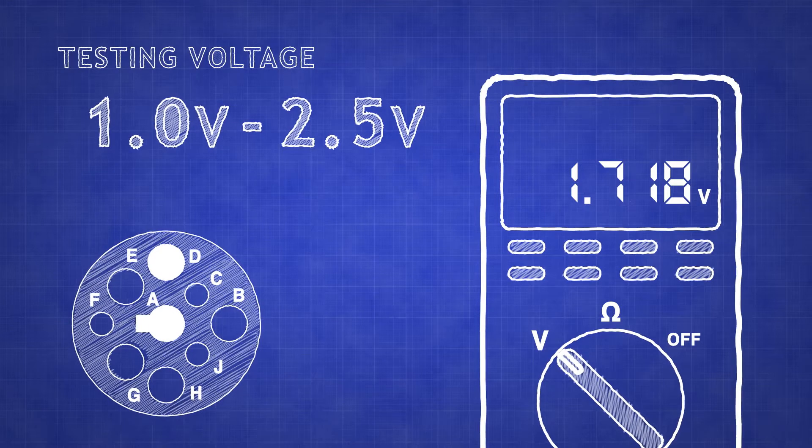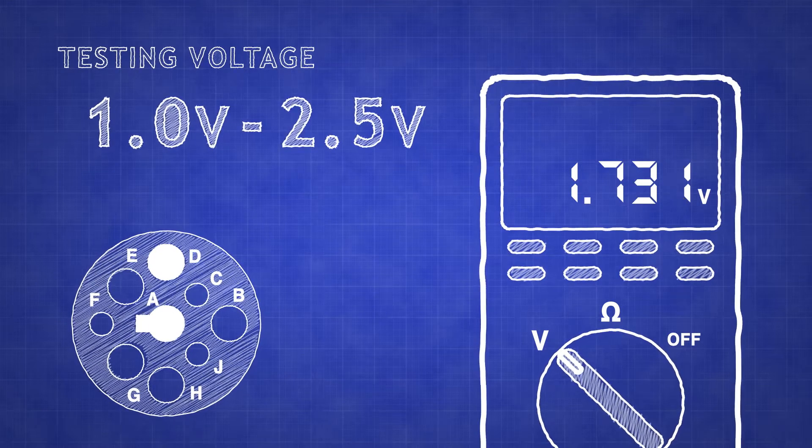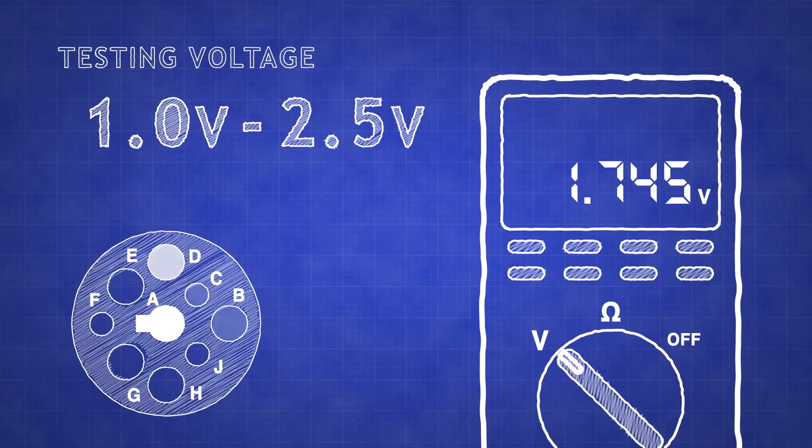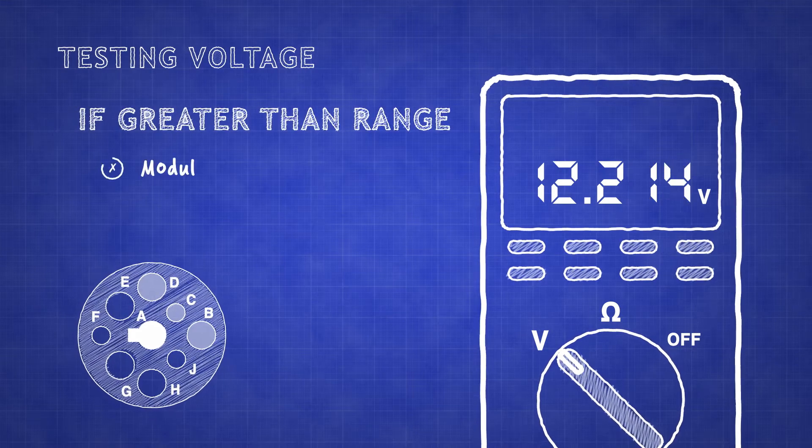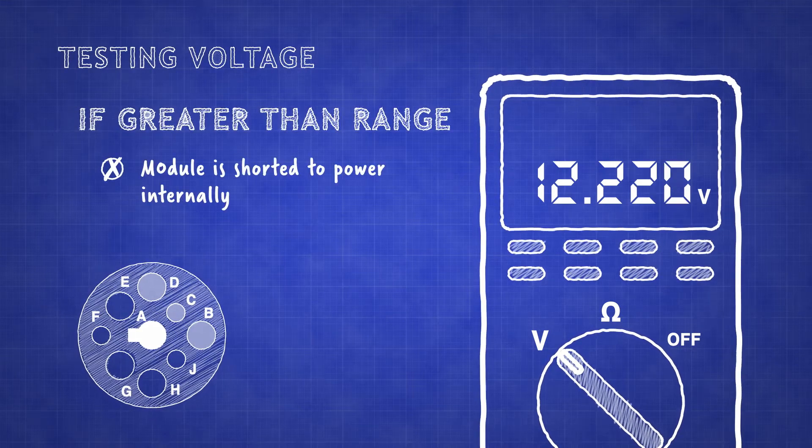If the readings were in this range, then the modules are working properly. If the reading is greater than the range, for example 12.2 volts, then you have a module that is shorted to power internally.